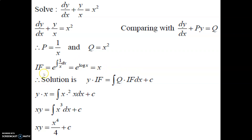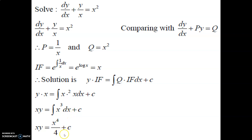The solution is y·IF = ∫(q·IF)dx + c. We have q = x² and IF = x, so x·y = ∫x²·x dx + c = ∫x³ dx + c. The integration of x³ is x⁴/4 + c. We derive the solution: x·y = x⁴/4 + c.